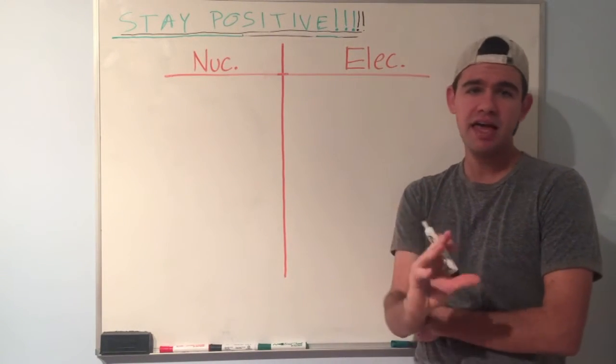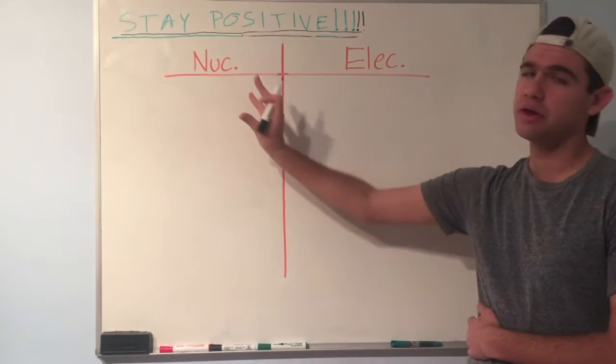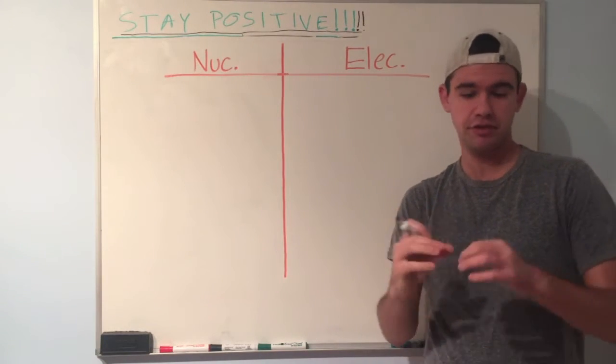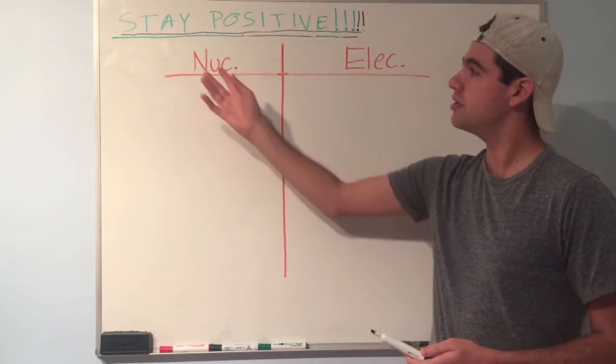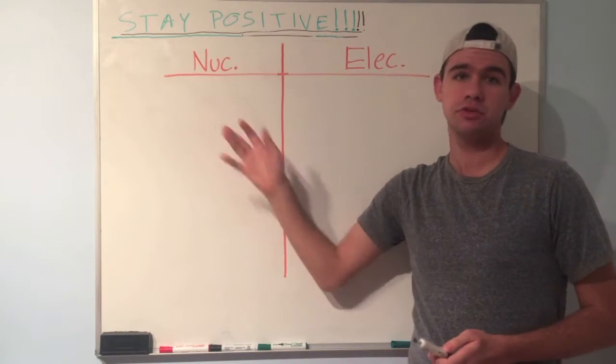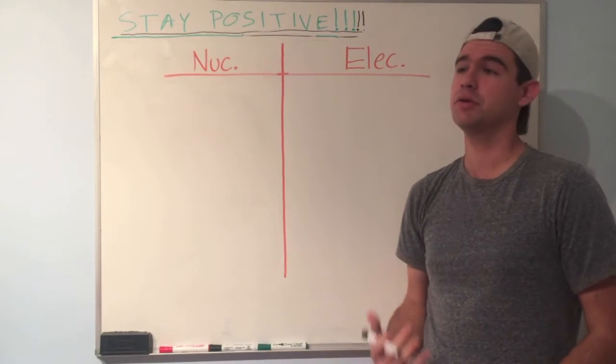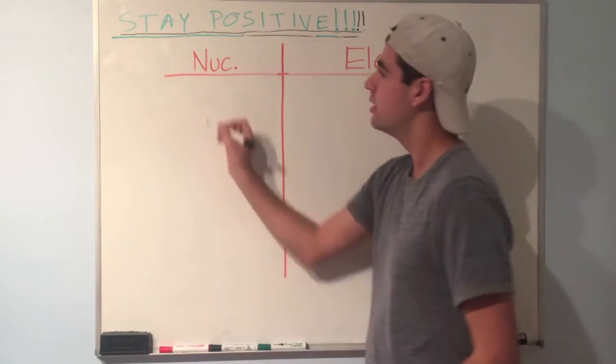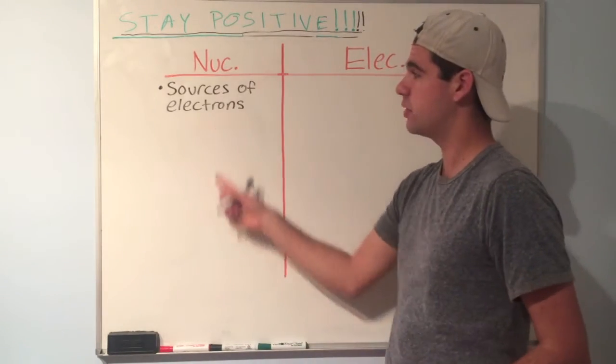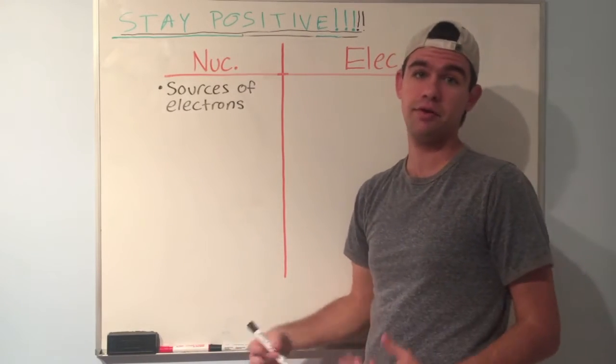Let's talk about nucleophiles first. The word file means like or love. And nucleo, you could think of nucleus, a positively charged nucleus. So what types of things love positive charges? What types of things are nucleophiles? Well, the answer is things with negative charge or sources of electrons. So what types of things can be sources of electrons? Well, let's start with the basic.